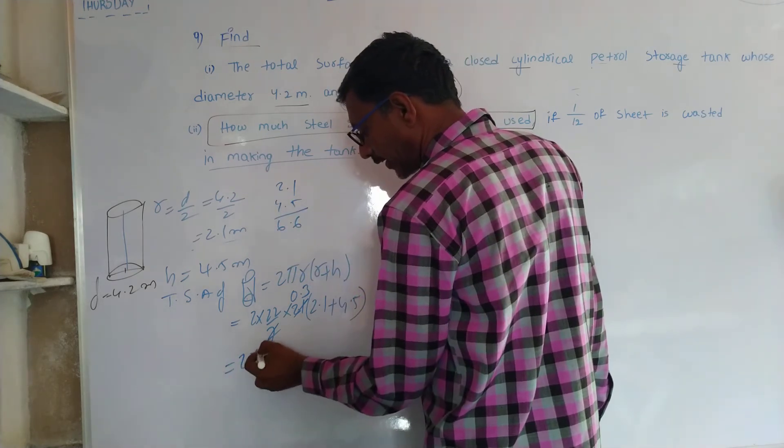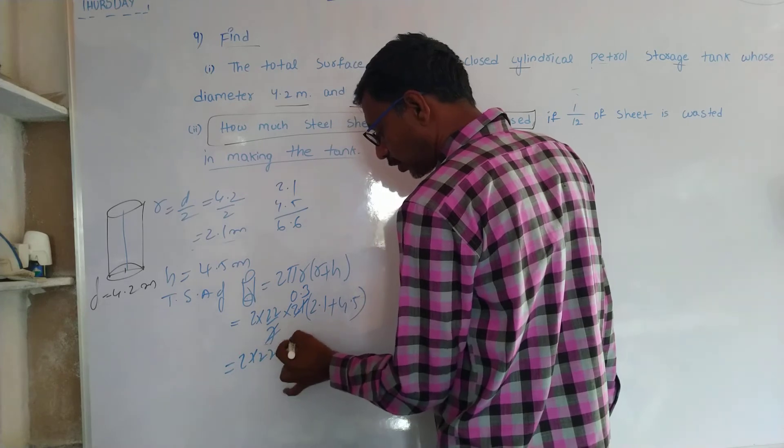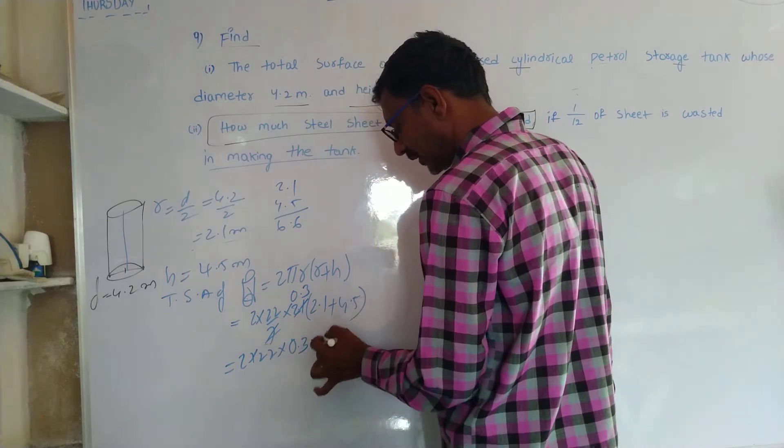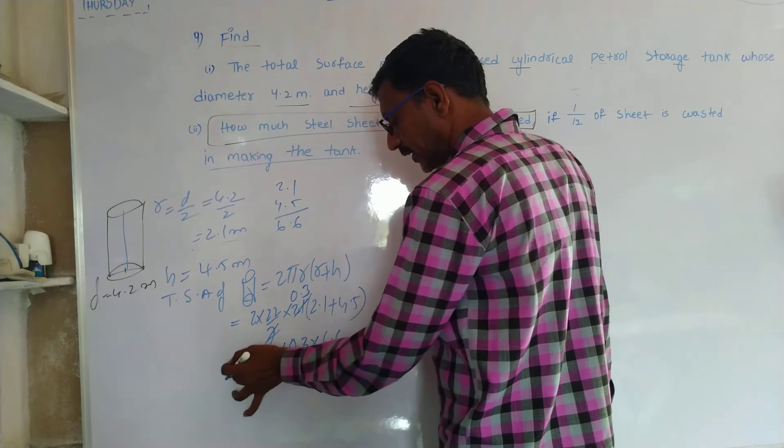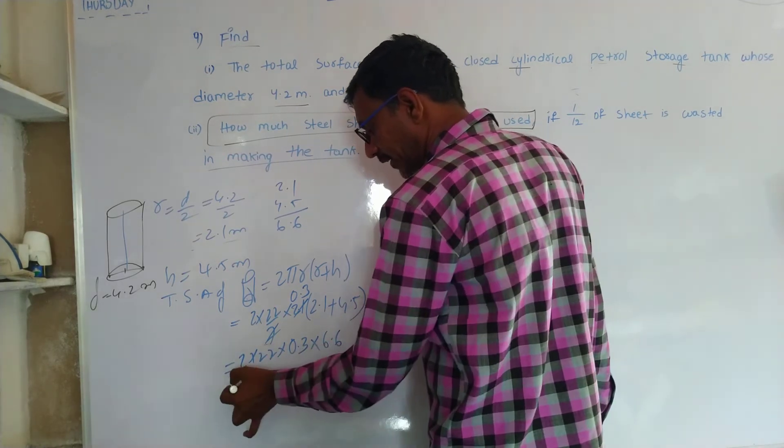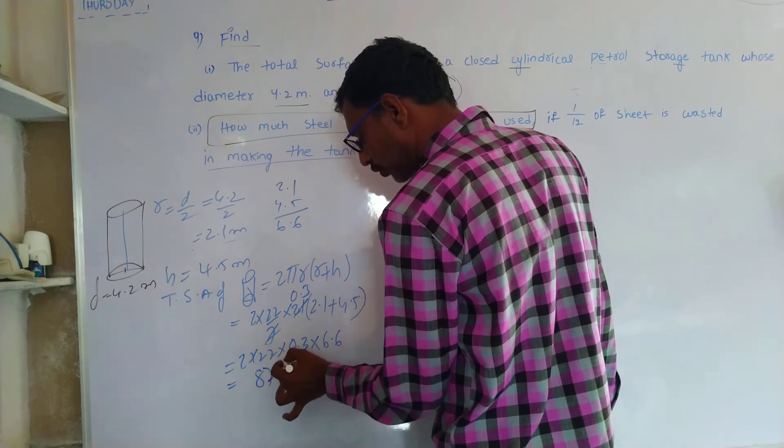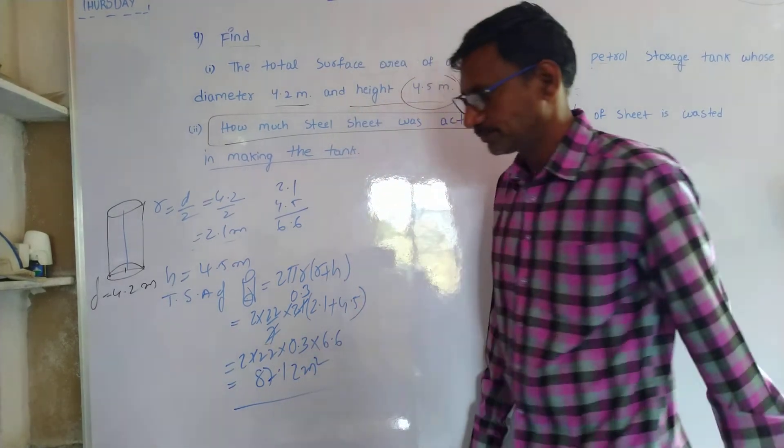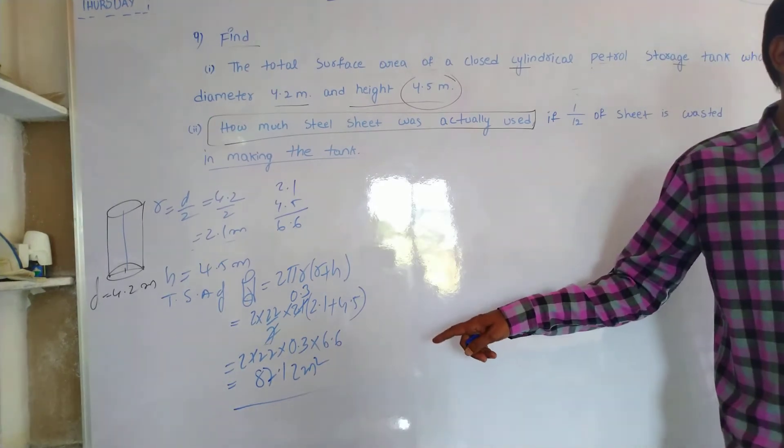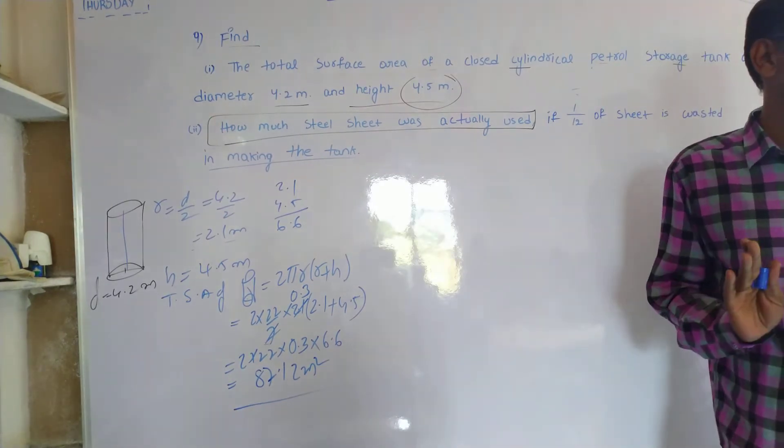So, 2 into 22 into 0.3 into 6.6. It will multiply just equal 87.12 meters square. This is the answer. It is clear.